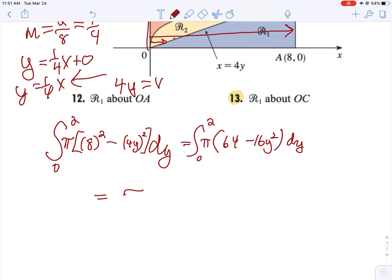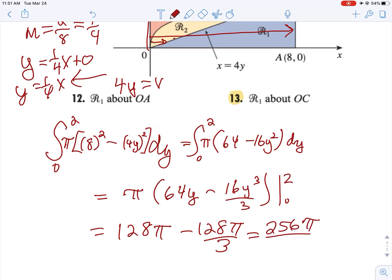So now we can just take the general antiderivative. So that's going to be 64y minus 16y cubed over 3. We're going to plug in 2. We're going to get 128 pi. And if we plug in 2 to the back we get 128 pi over 3. When we plug in 0 it's subtracting 0. And so then our final answer when we get common denominators is 256 pi over 3.